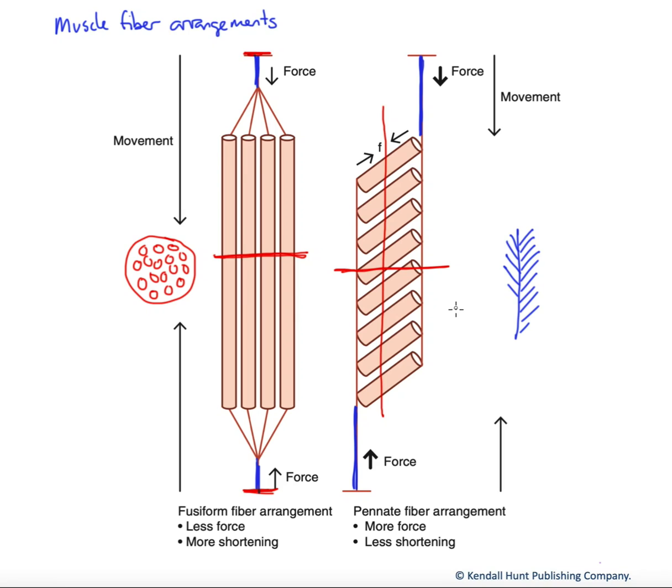One of the negatives of pennate fiber arrangement is that because the muscle fibers are all pulling at an angle against their tendons, we get a limited range of motion. These don't shorten as dramatically. An interesting point to make is that a lot of very large muscles are often in pennate fiber arrangement. And that hints at the idea that this generation of greater force is a plus for those larger muscles moving larger loads, a bigger portion of our body mass.